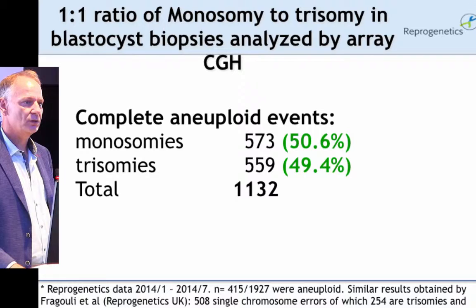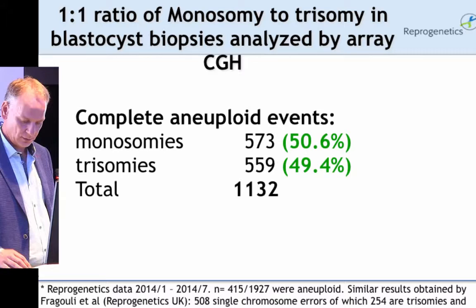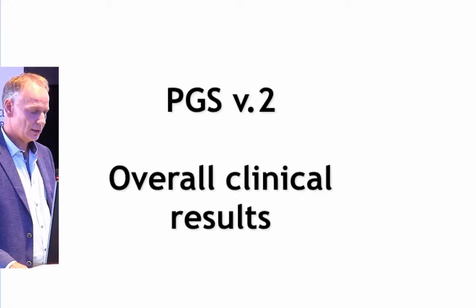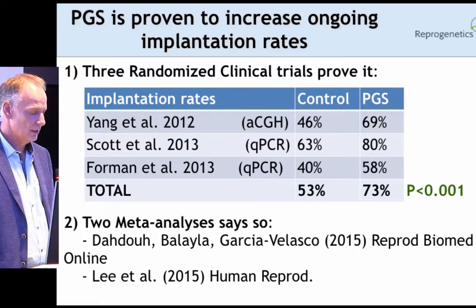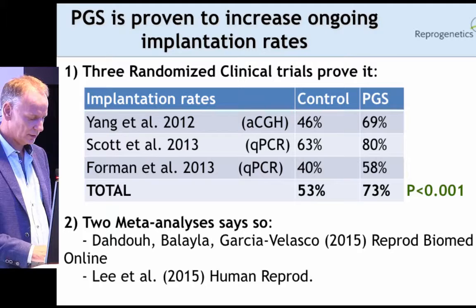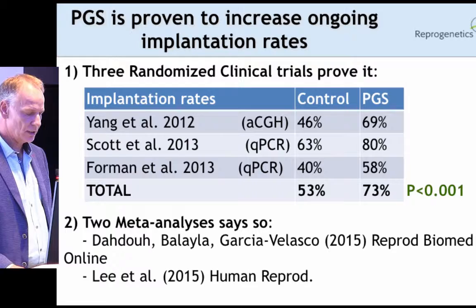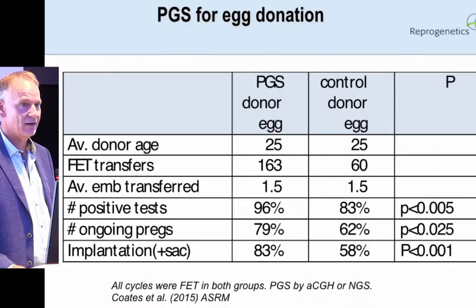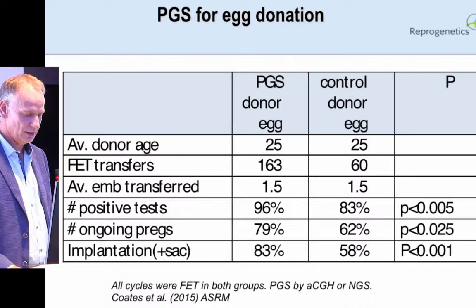We didn't see a difference between monosomies and trisomies whether we do aCGH or next-generation sequencing, which is what you should find since they have the same chance of being produced by a meiotic error. When you do PGS, there have now been several clinical randomized trials — three that have been published all show significant improvement in ongoing pregnancy rates. These were done by aCGH or by quantitative PCR by the group of Richard Scott. There are also two meta-analyses showing improvement in ongoing pregnancy rates with PGS, and we've even seen an improvement in egg donor groups, which have the lowest chance of producing abnormal embryos.